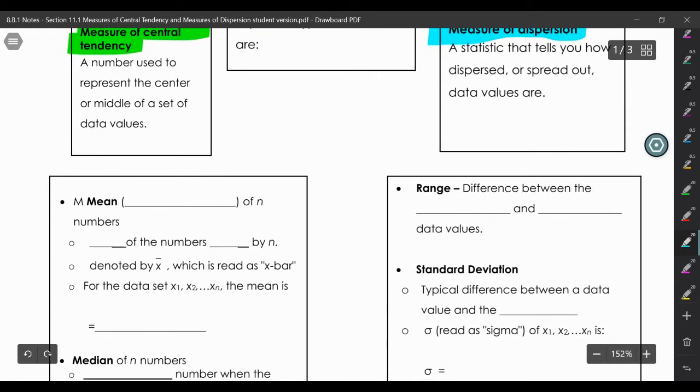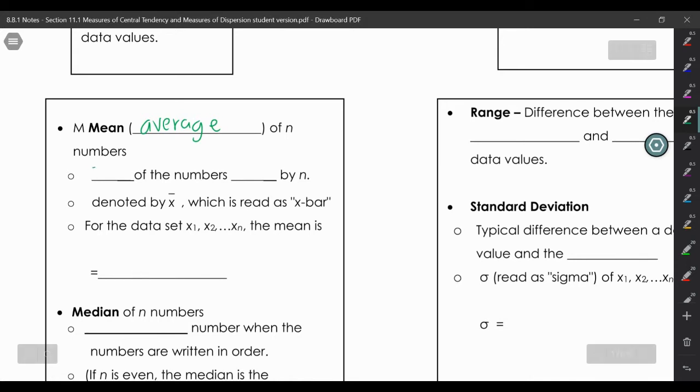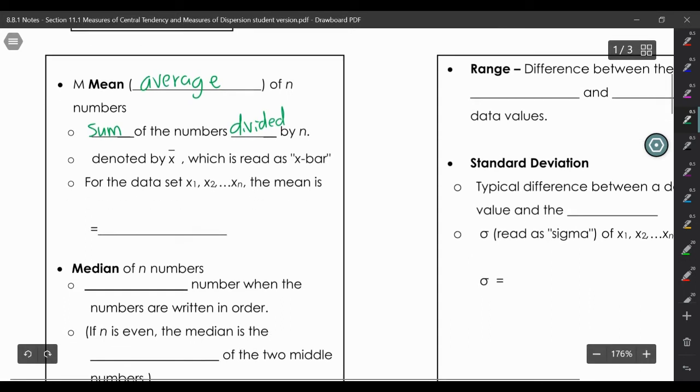Let's look at the central tendencies first. We have mean, and you've probably heard the mean referred to as the average. You're going to sum up or add the numbers and then divide by n. The statistical way to write that is this little x bar, which means average.